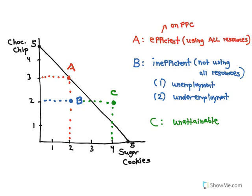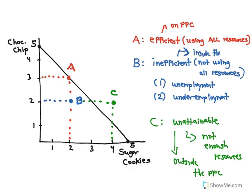So in other words, I do not have enough resources to make this combination. So any point that is outside the PPC is going to be unattainable. And I forgot to mention that any point that is inside the PPC is going to be inefficient.